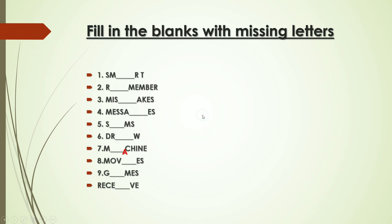The missing letter is A. Then second one — 'remember' — the missing letter is E. Third one, 'mistakes' — the missing letter is T. Then fourth one, 'messages' — the missing letter is G. Fifth one, 'sums' — missing letter is U. Sixth one, 'draw' — the missing letter is A.